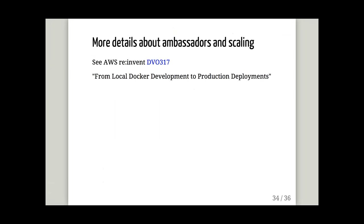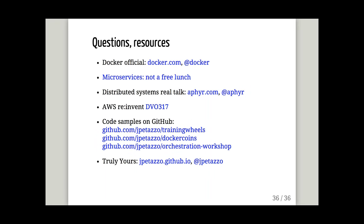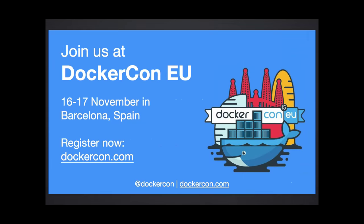If you want more details about ambassadors and scaling, we did an extremely in-depth presentation at the AWS re:Invent conference a few weeks ago — DVO 317 — which covers a lot of what we covered here but with a strong emphasis on implementation details. Thank you — that's all I have for today. I'll now answer questions. There's also the Docker European conference in Barcelona, November 16th and 17th, which you should attend if you have a strong interest in Docker and containers.